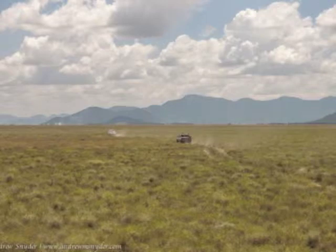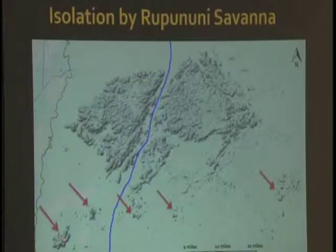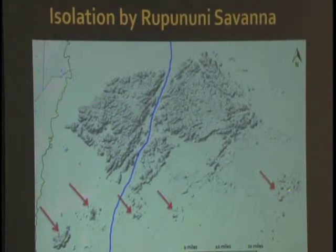I want to see exactly what effect the savannah has had on smaller isolated mountains relative to the Kanukus. It's the same map as before, but now for this scope of the survey I want to hit these isolated forest mountain islands — this down here being Cousad Mountain, this is Shariri Mountain, and then here's a series of other small mountains that I would like to be able to hit.